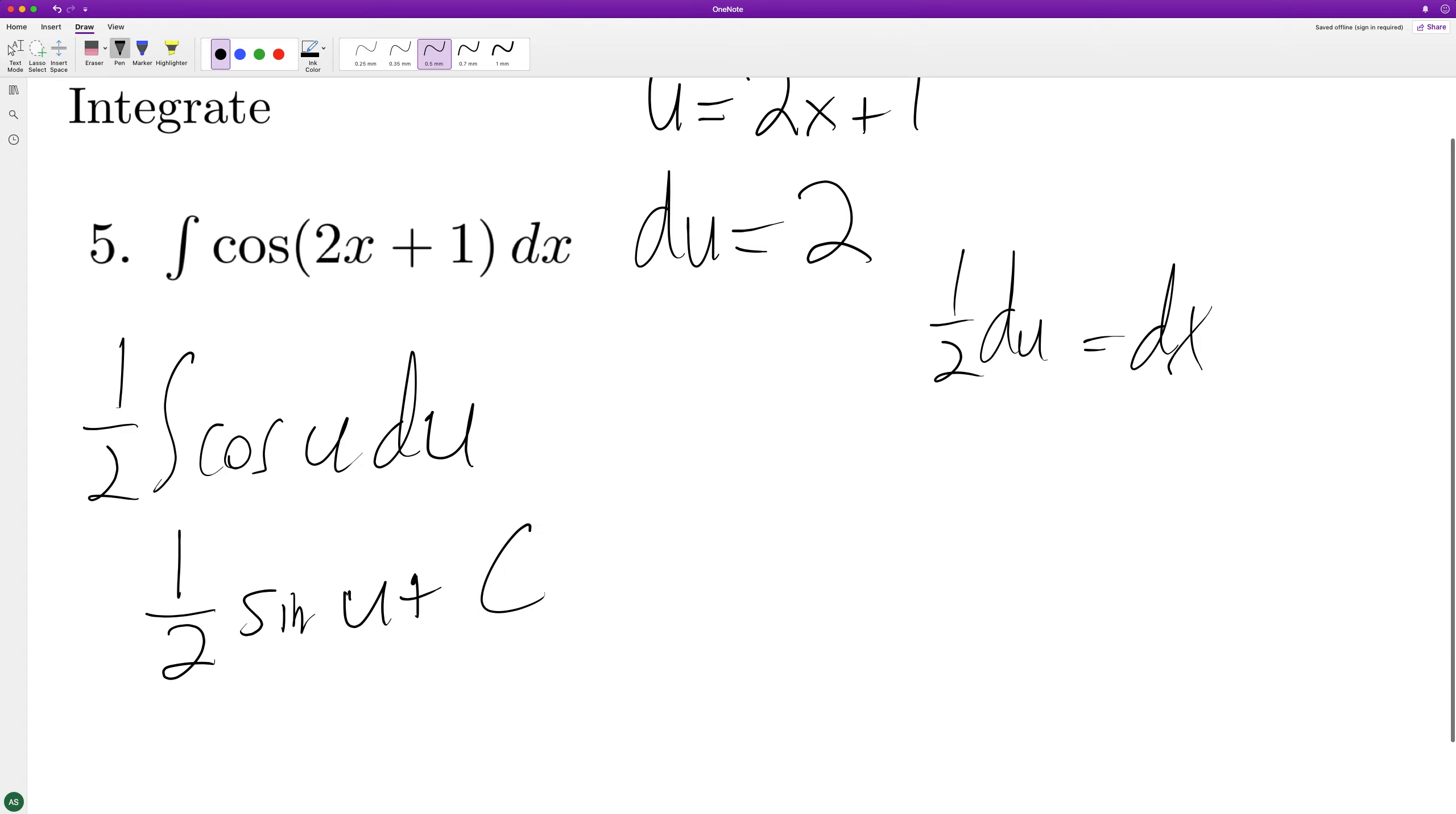We just substitute back in for u, so we end up with 1/2 sine of 2x plus 1 plus c. That's it.